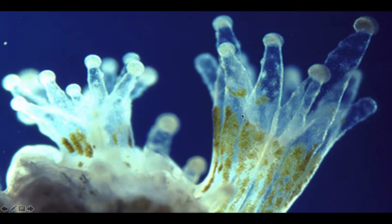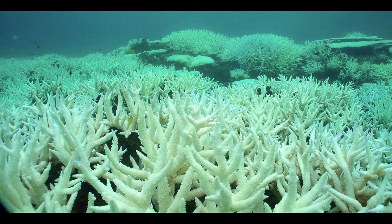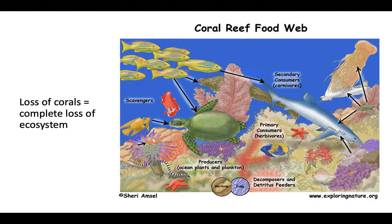When it gets too hot, the zooxanthellae can't survive — it's outside their ecological tolerance, and they die. The coral suddenly has no source of energy and starts to struggle. Coral can bounce back from this, but it's not a sure thing. When they die completely, the algae are what gives the coral its color, which is why it's called coral bleaching — when the algae die, the coral turns white. It's pretty, but when you realize it's because they're dead, it's a tough pill to swallow. If corals are gone, the whole ecosystem collapses and ceases to exist, with probably not a great chance of recovery.